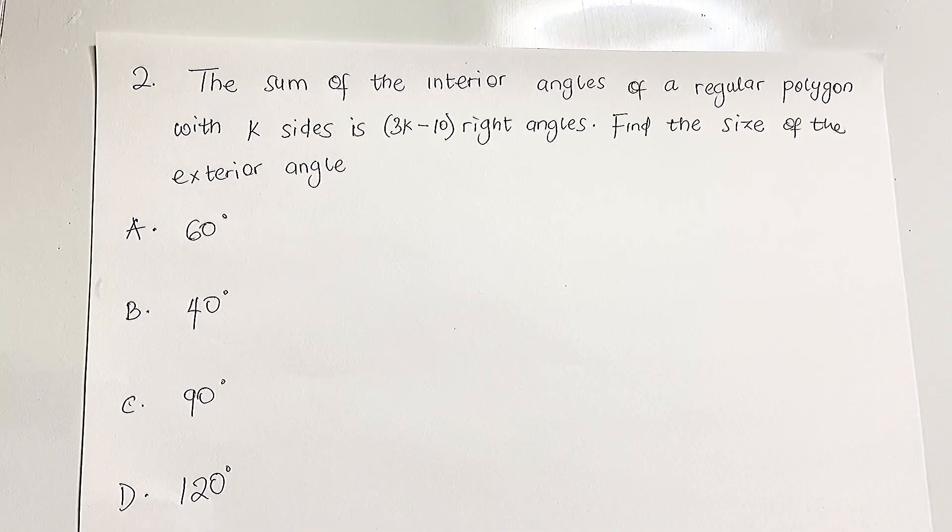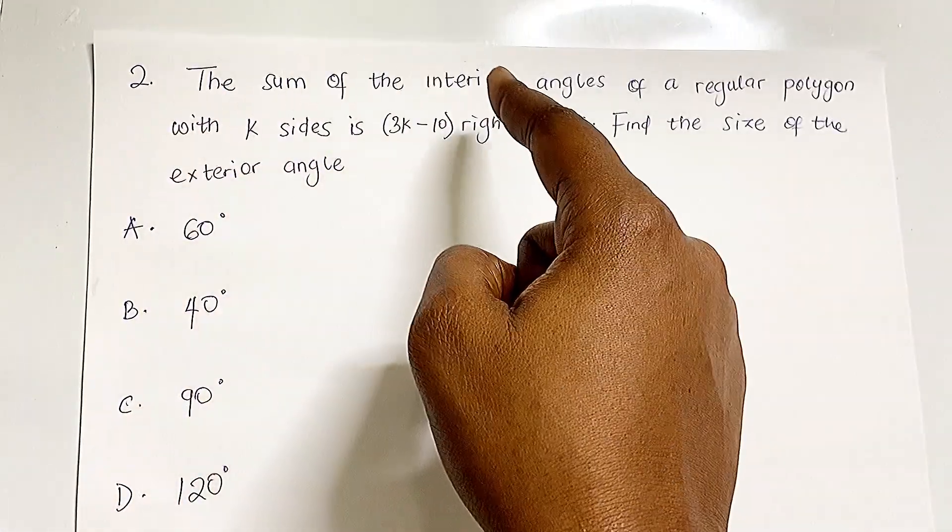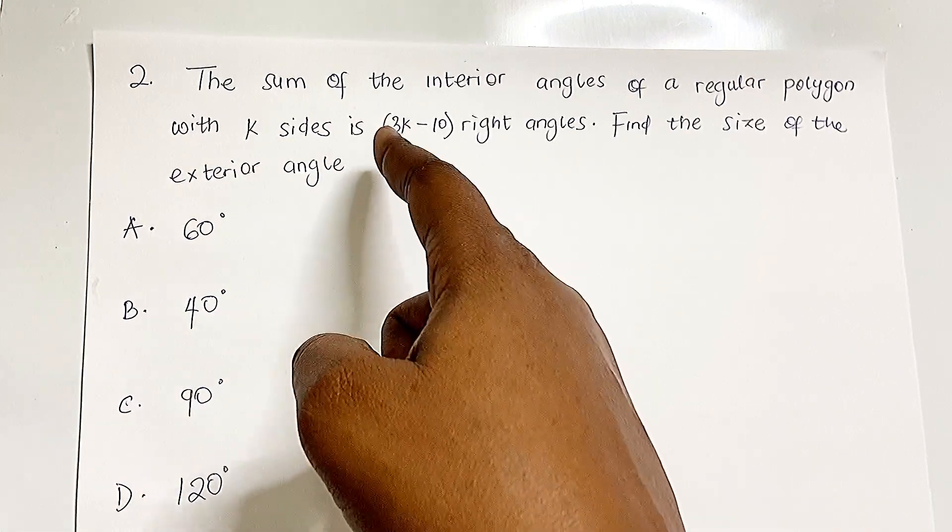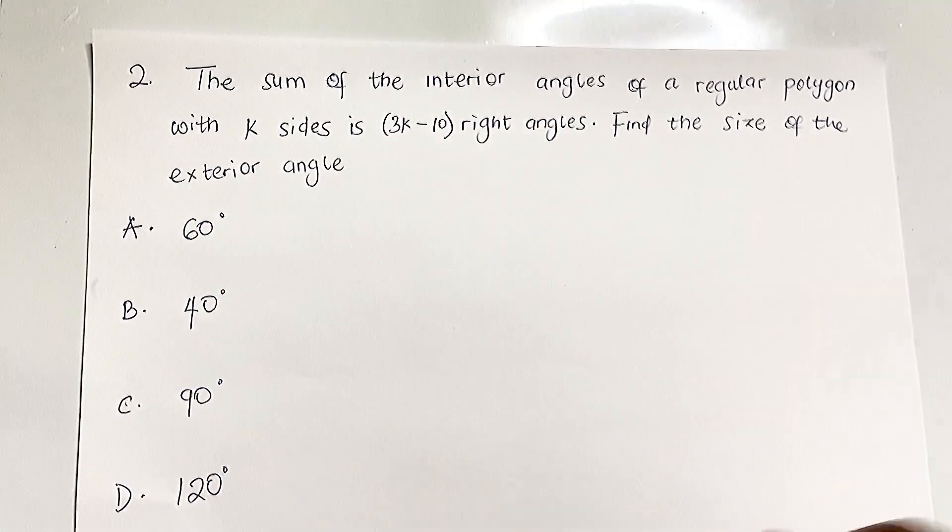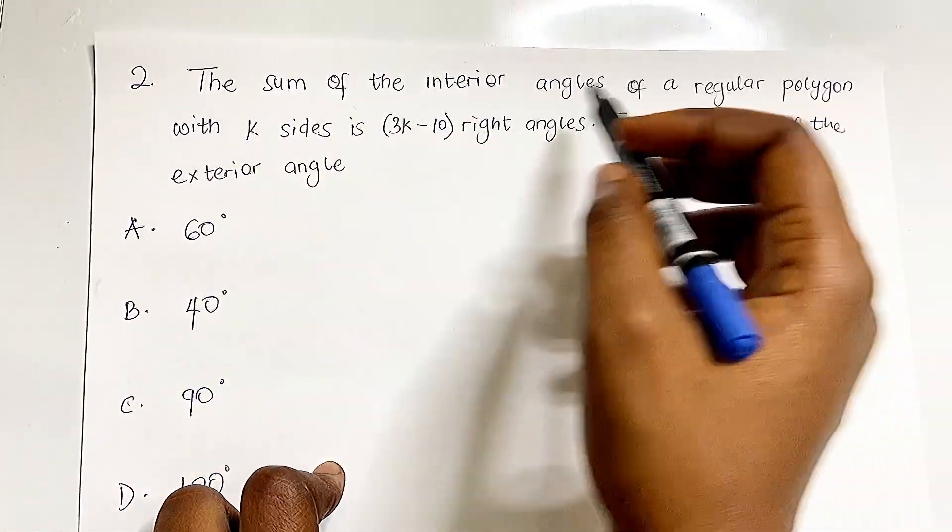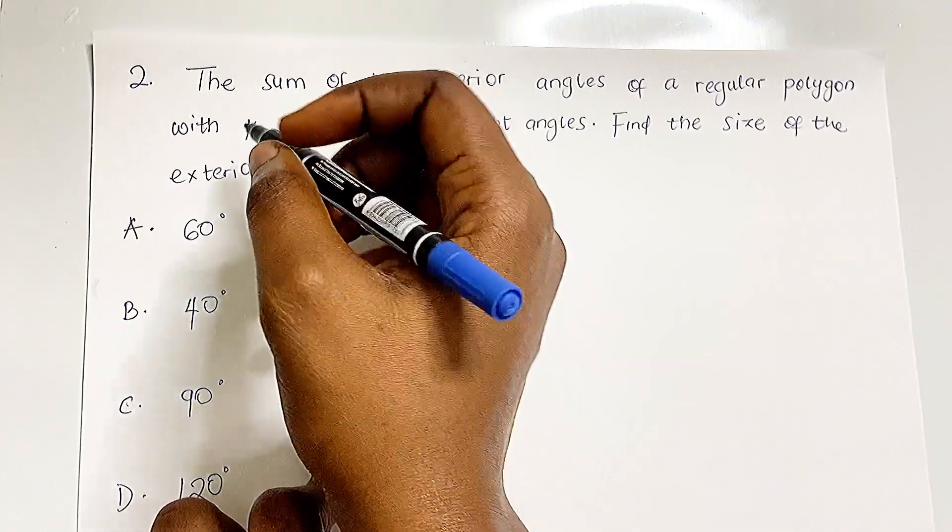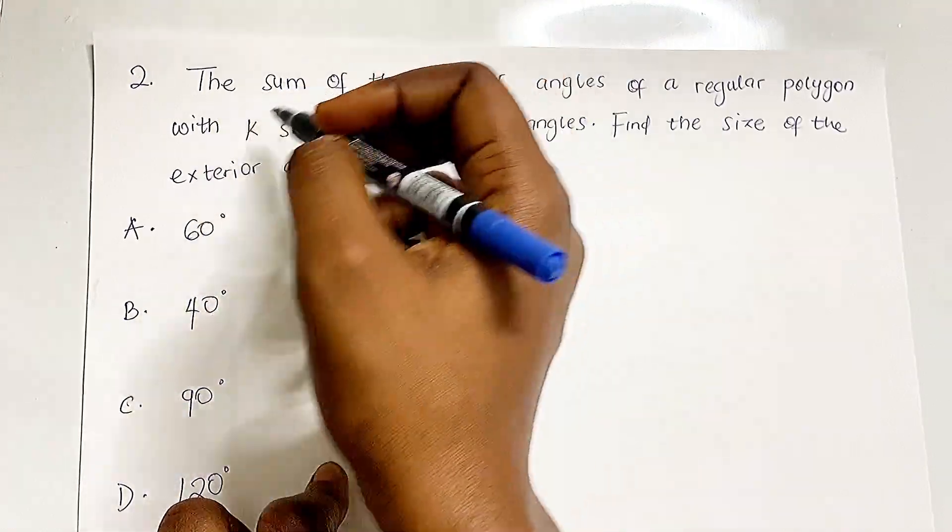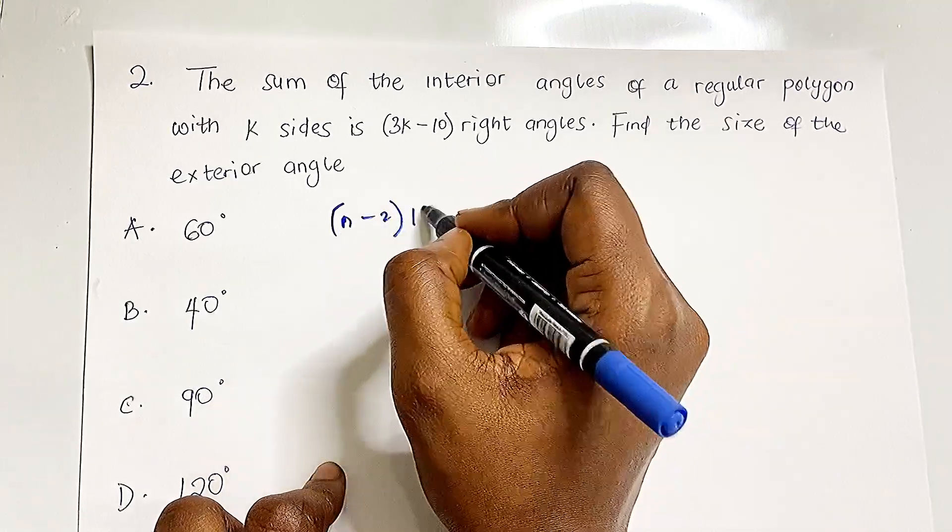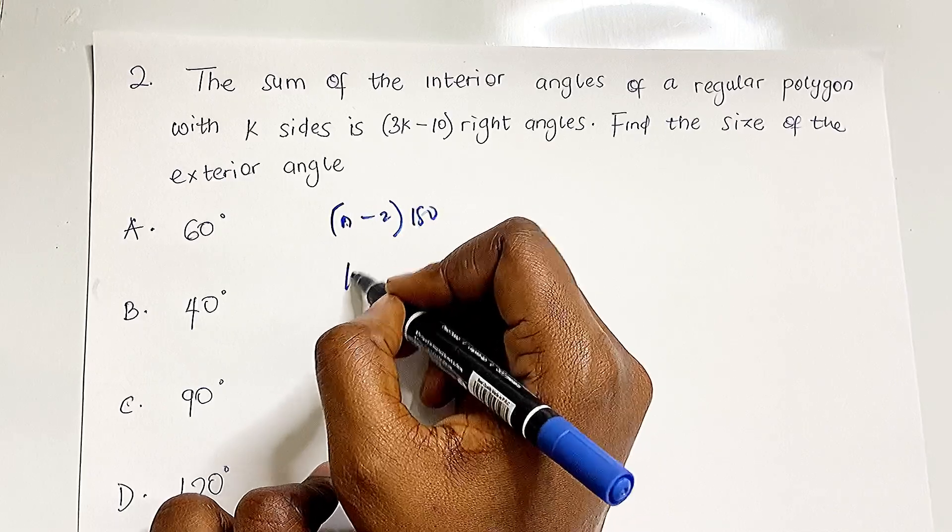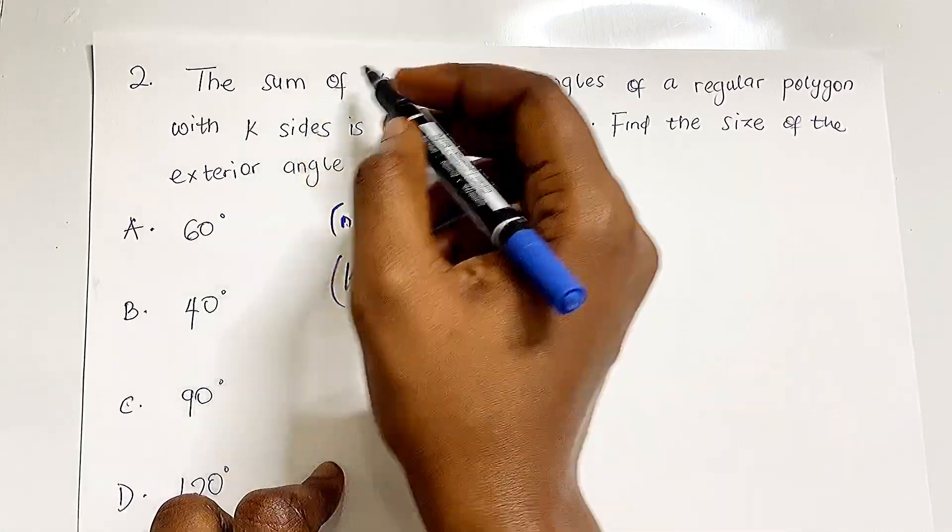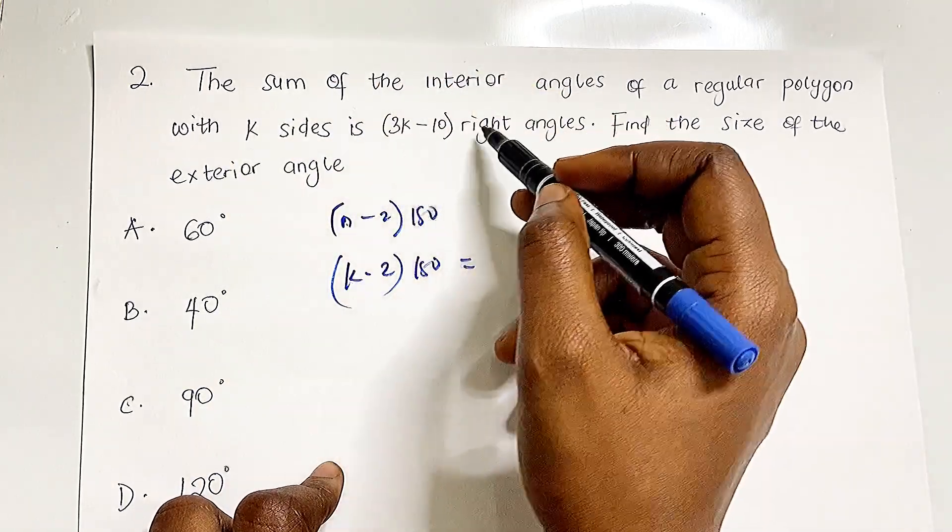Question 2 is also about interior angles. The sum of the interior angles of a regular polygon with k sides is (3k-10) right angles. Let's write this as an equation. Instead of having a number n, we have k. So using the formula (n-2) × 180, we replace n with k: (k-2) × 180.